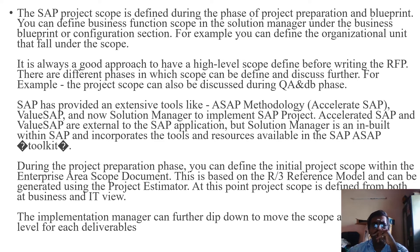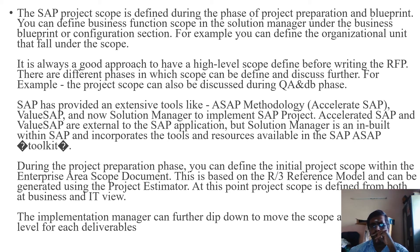For SAP projects, the scope is defined during the project preparation and blueprint phases. You can define the business function scope in Solution Manager under the business blueprint or configuration section. It is always a good approach for any SAP project to have a high-level scope defined before writing the RFP. The scope can also be discussed during question-and-answer and development phases. SAP has provided extensive tools like ASAP methodology — Accelerated SAP — Value SAP, and Solution Manager to implement SAP projects.